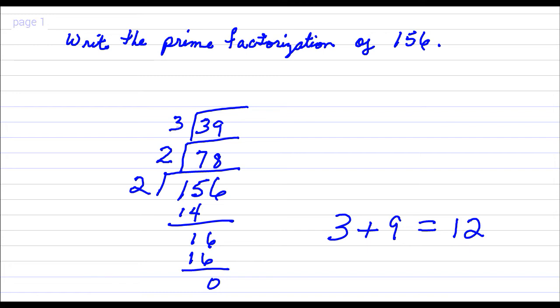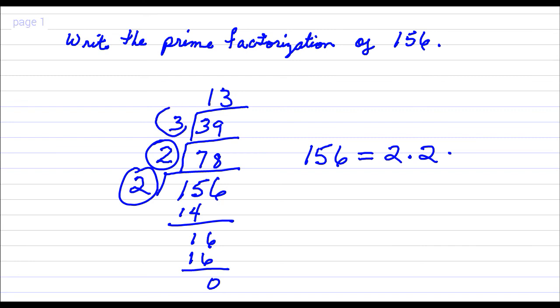So 39 divided by 3, that is 13. Okay, so we're done here. So 156 is 2 times 2 times 3 times 13.